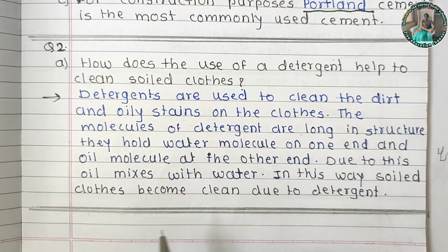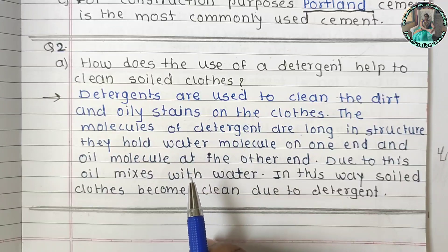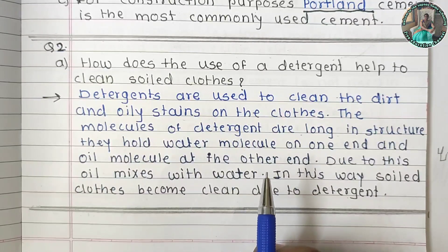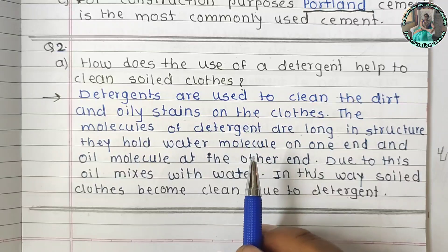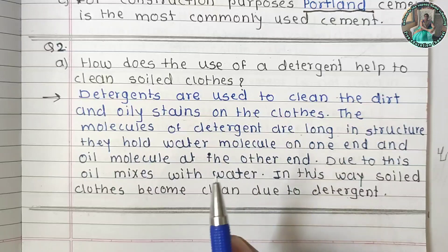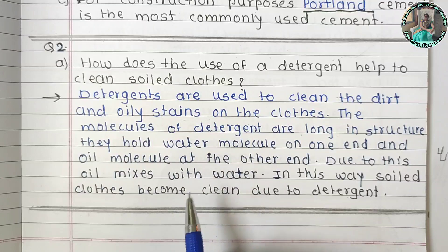The meaning of this is that the detergent molecules have two different ends. One end attracts water molecules and the other end attracts oil molecules. Because of this, all the dirt and oil on the clothes mixes into the water and gets washed away, making the clothes clean.